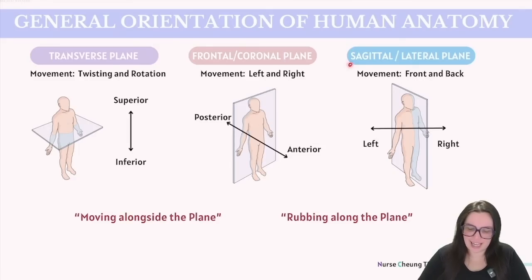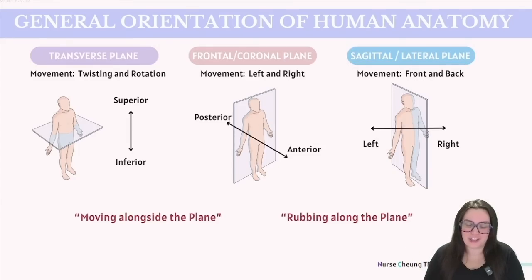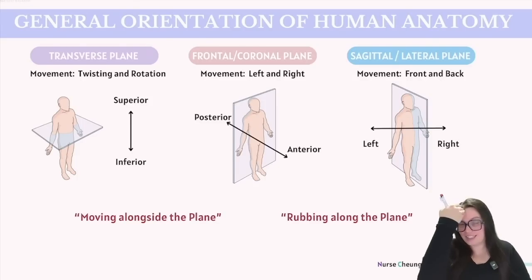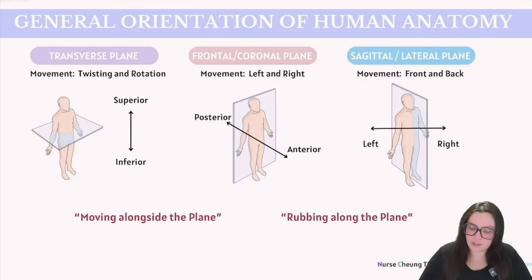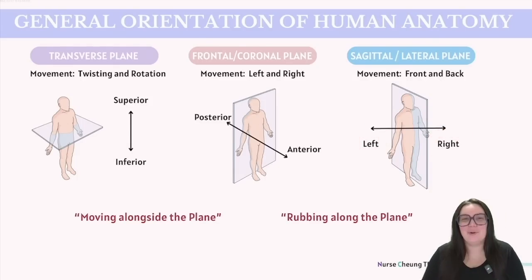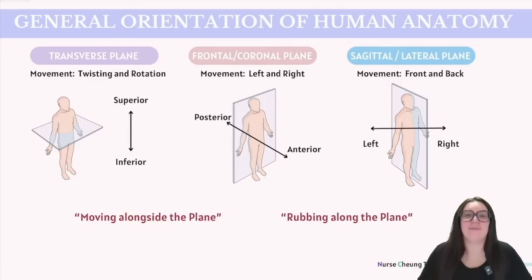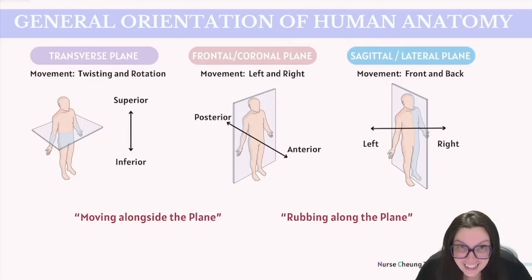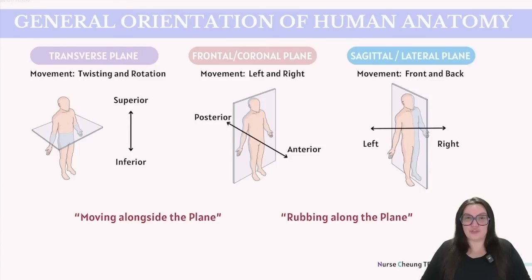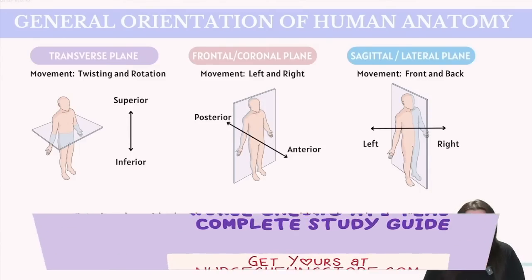Last up, we have our sagittal or lateral plane — again, they're used interchangeably on the ATITs. This particular plane divides us in half, and at this time we're looking at our left side and our right side. Movements within the sagittal plane are those that occur forward and backward: flexion would be bending and extension would be straightening. Those are the typical movements you're going to see in the sagittal plane.